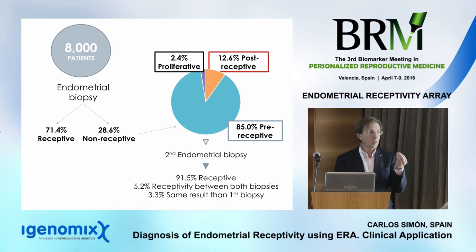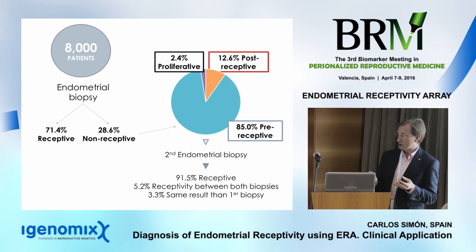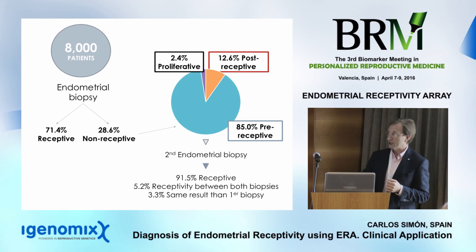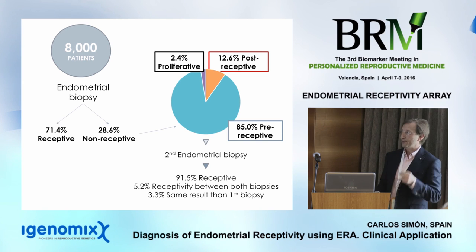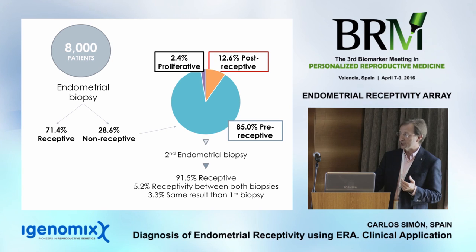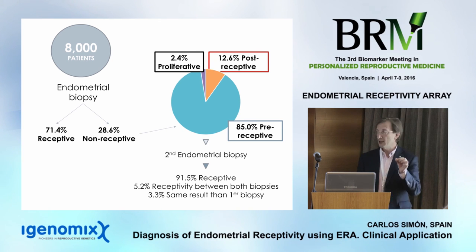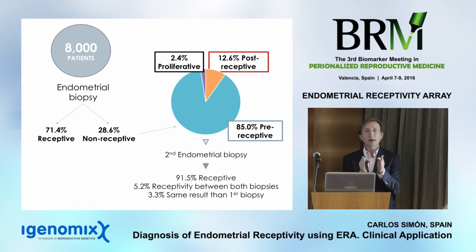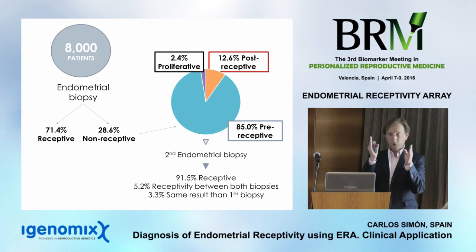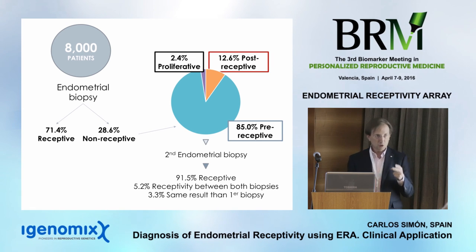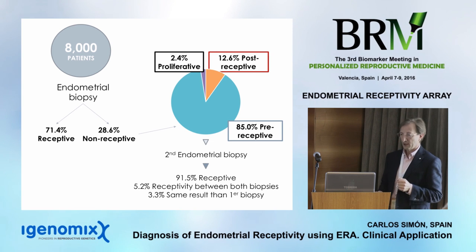In the non-receptive cases — pre-receptive, receptive, some proliferative — we advise doctors: if pre-receptive, retest at progesterone plus seven. For difficult patients we suggest confirming, because 91% of the time we know the result, but 5% have a narrow window. We have identified narrow windows of as little as 12 hours. For very difficult patients, I suggest double-checking to avoid repeating problems.